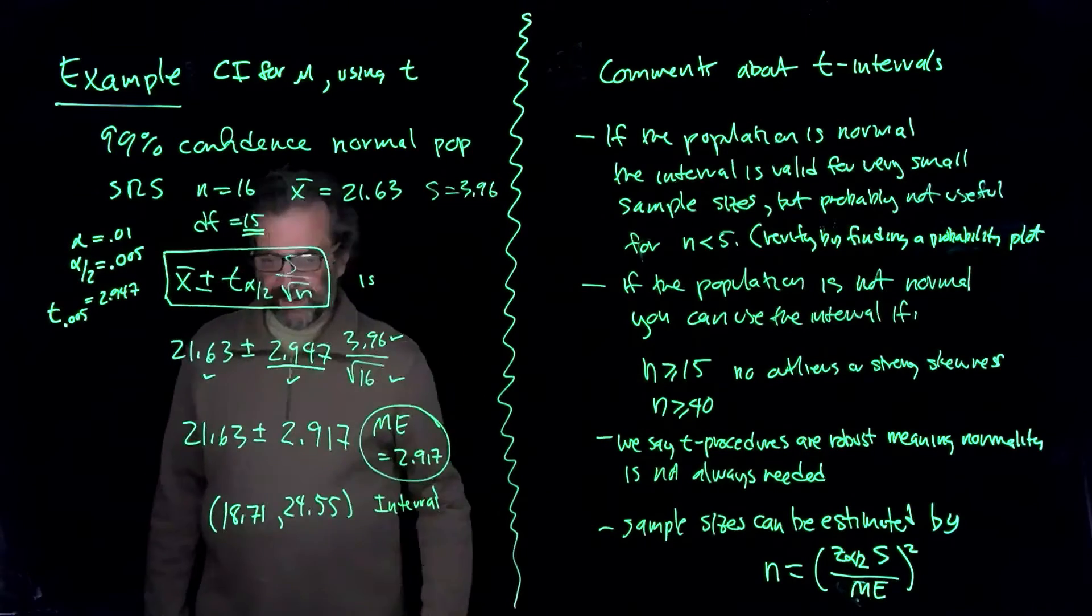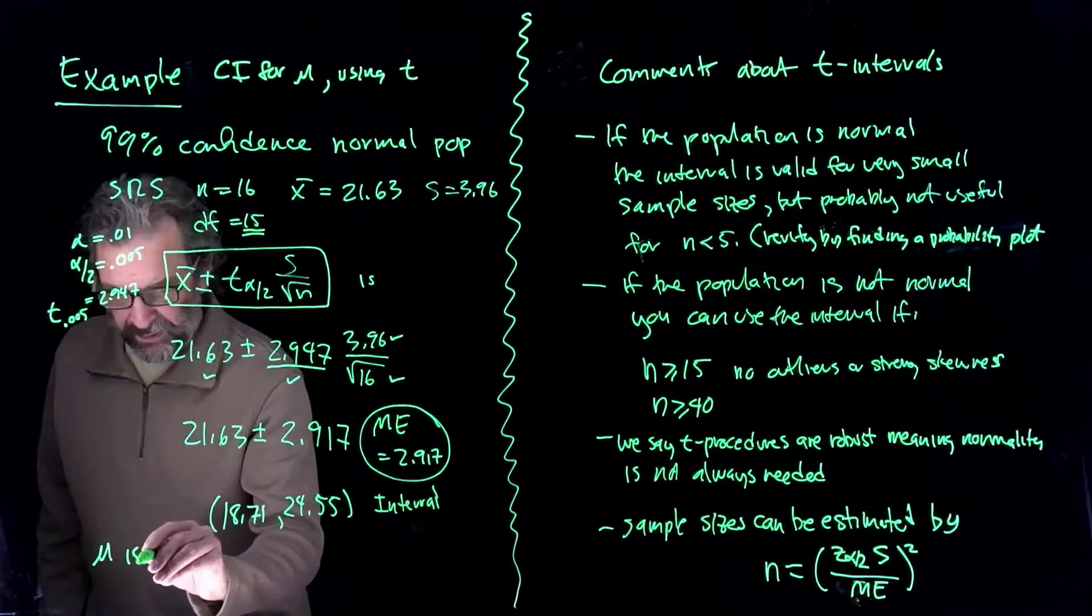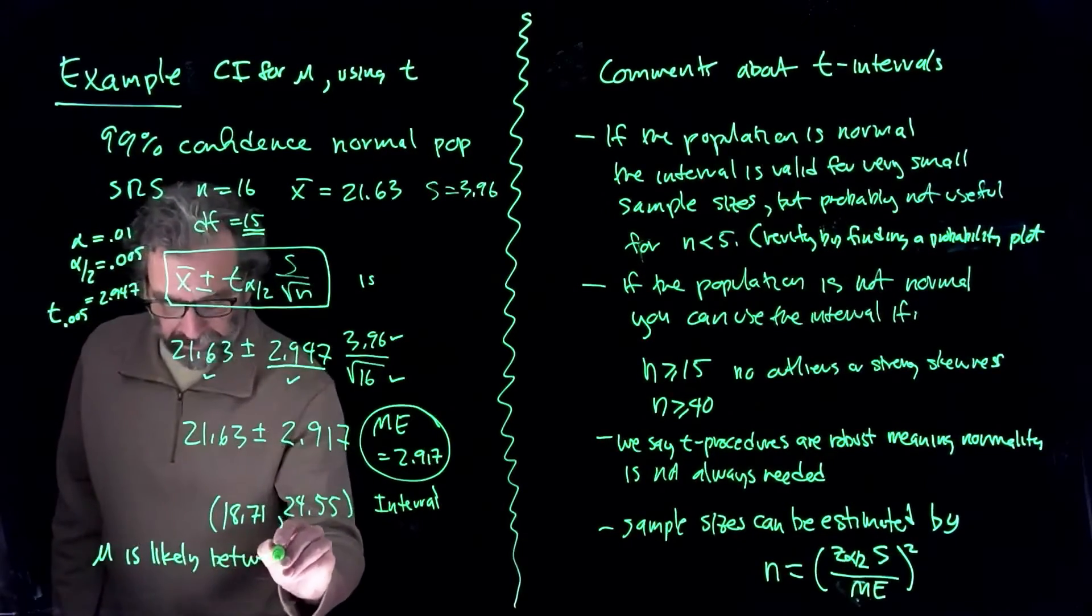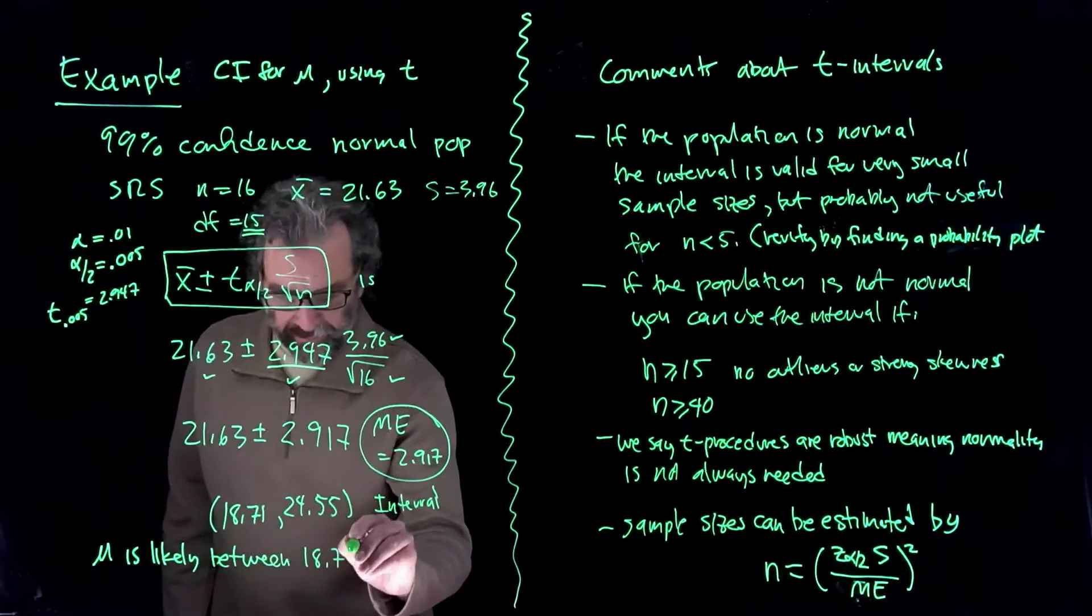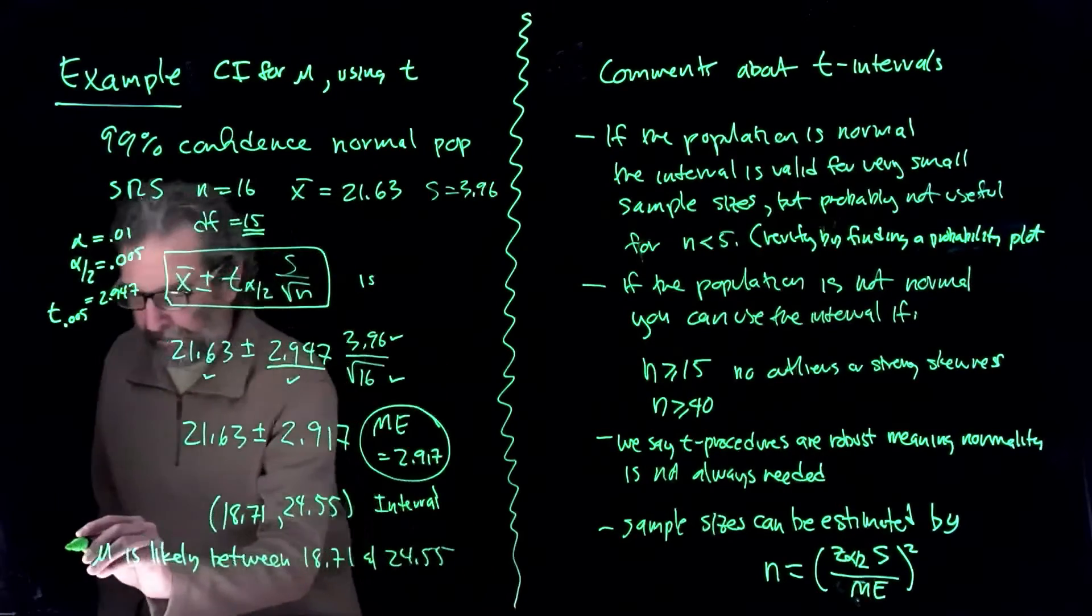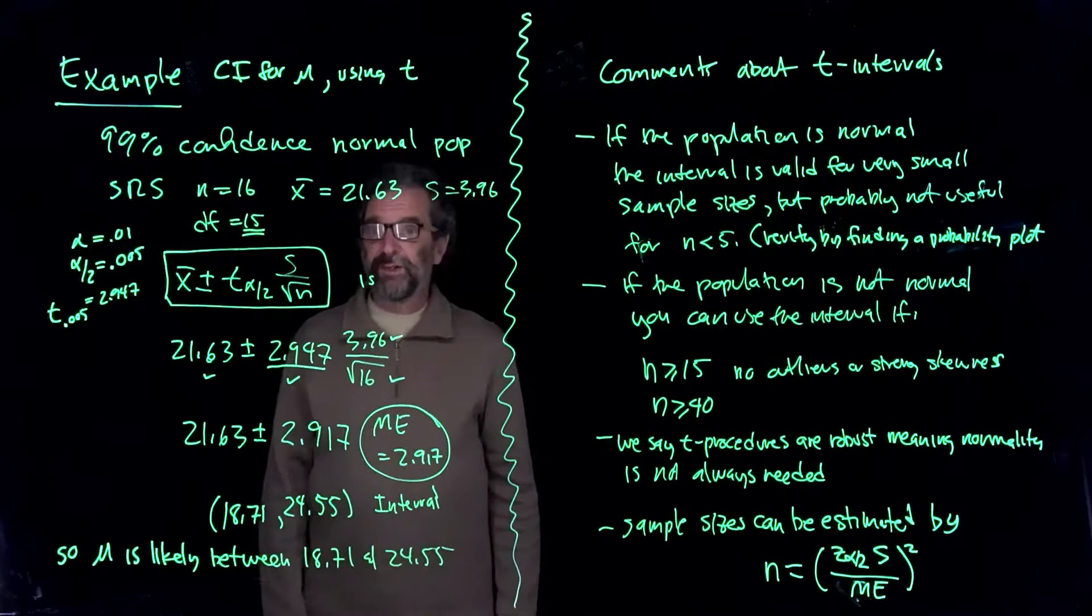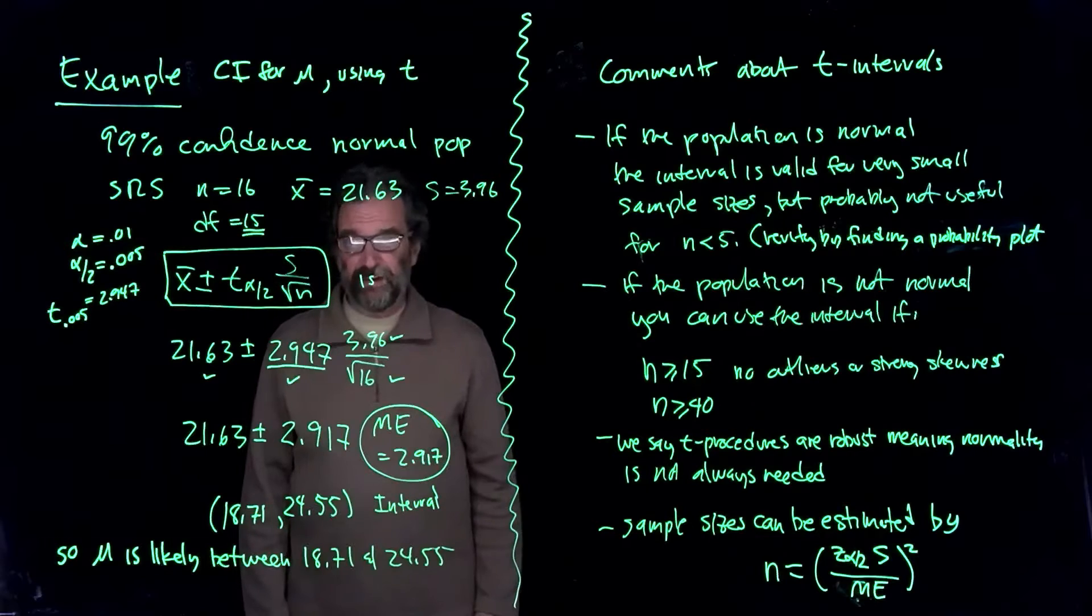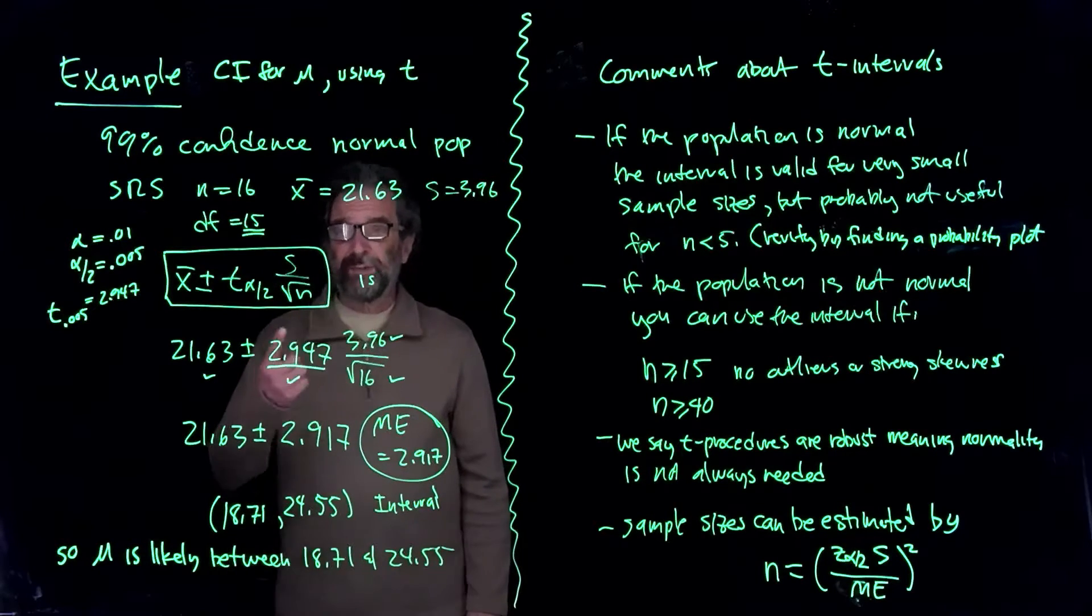So this says mu is likely between 18.71 and 24.55. It's talking about the population mean being between 18.71 and 24.55. And it's a 99% confidence interval.